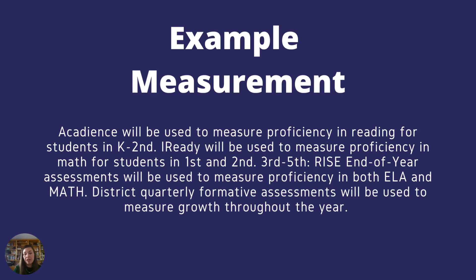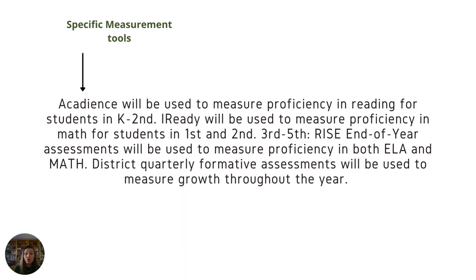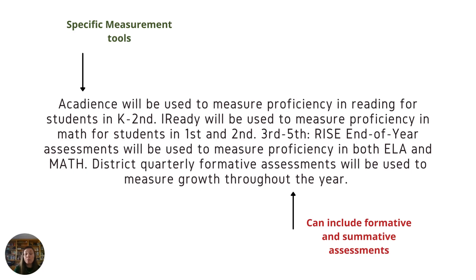Next, your plan should have a measurement piece. This measurement piece should explain how you are going to measure whether or not the goal was accomplished. So in this case, Acadians will be used to measure proficiency in reading for students in K through 2nd. I-Ready will be used to measure proficiency in math for students in 1st and 2nd. And for grades 3 through 5, RISE end-of-year assessments will be used to measure proficiency in both ELA and math. District Quarterly Formative Assessments will also be used to measure growth throughout the year. What makes this a successful measurement piece is that it indicates the specific measurement tools that will be used throughout the year, and they included both formative and summative assessments. You can include as many assessment tools as you would like, as long as you indicate what specific measurement tools you plan to use.